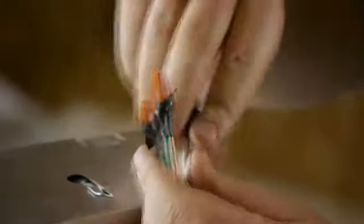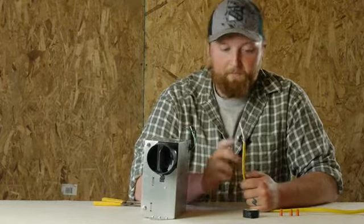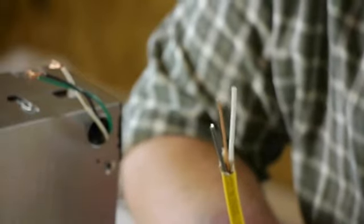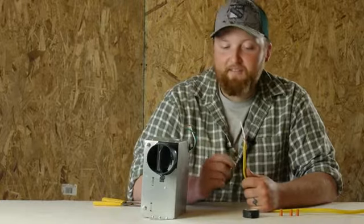First thing you want to do is make sure that you have the proper gauge wire running to the bathroom fan. This here is a 12-2 wire. This will supply enough juice for the fan and the light at the same time.